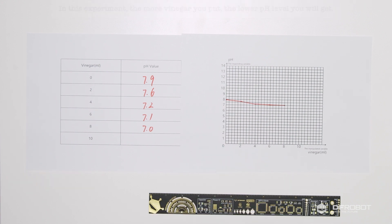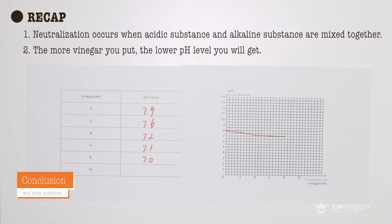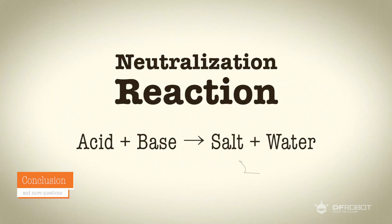Okay, here's the recap. Neutralization occurs when acidic substance and alkaline substance are mixed together. The more vinegar you put, the lower pH level you will get. And then you know why soapy water works for those mosquito bites, as it's due to neutralization.